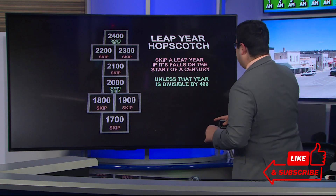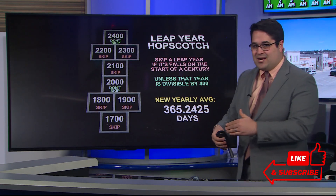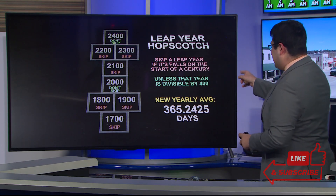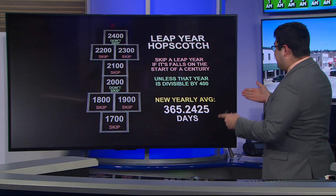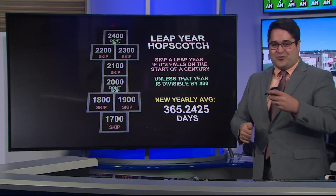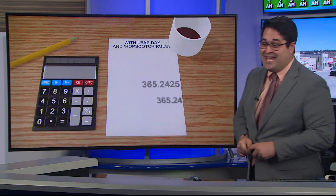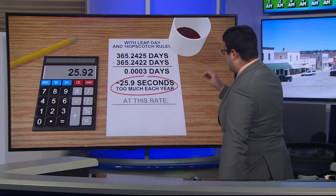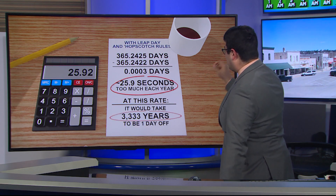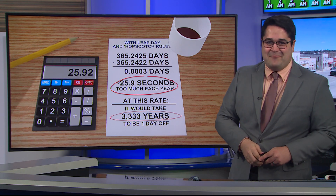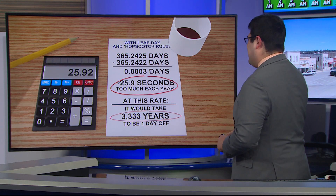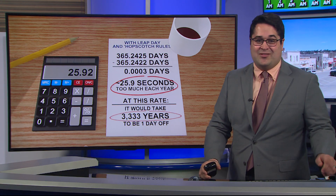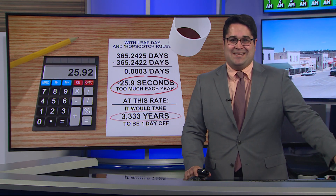We kind of play this hopscotch: every single time we have a leap year, if it is the start of a century, we actually skip that leap year — unless the year is divisible by 400. That makes the new yearly average 365.2425 days, which is a lot closer to what we should be. We'd only end up with a 0.0003-day surplus — that's 25.9 seconds too much each year — and at that rate, it would take 3,333 years to be one day off.